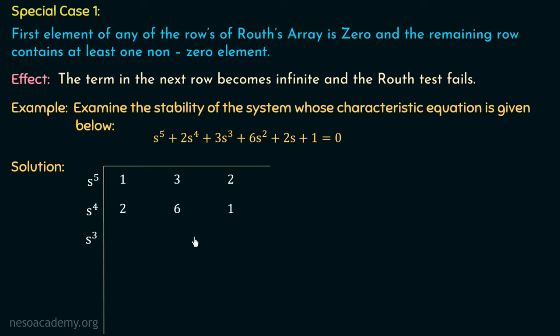Moving to the next element of the s³ row: (2×2 − 1×1)/2 = (4 − 1)/2 = 1.5. The third element will be 0 because we have no non-zero terms in the first two rows at that position. We can see that the first element of this third row is 0, and the remaining row contains at least one non-zero element — 1.5. So this is Special Case 1 of RH criteria.